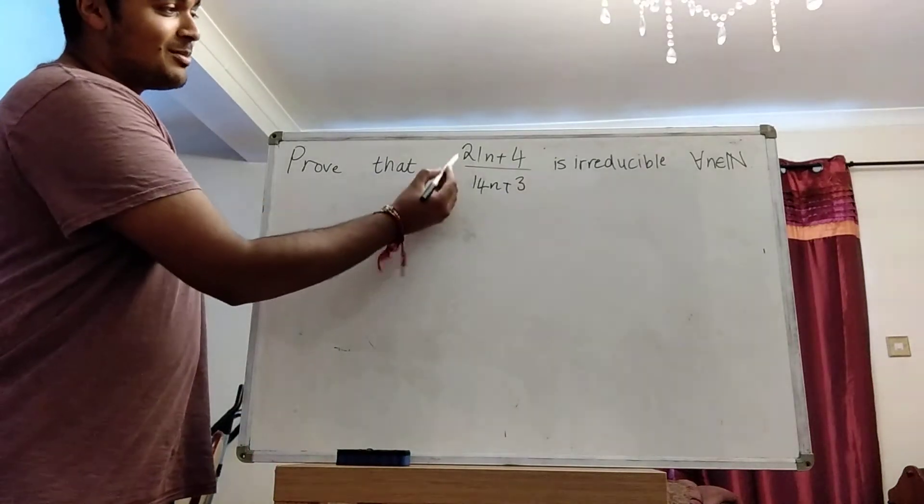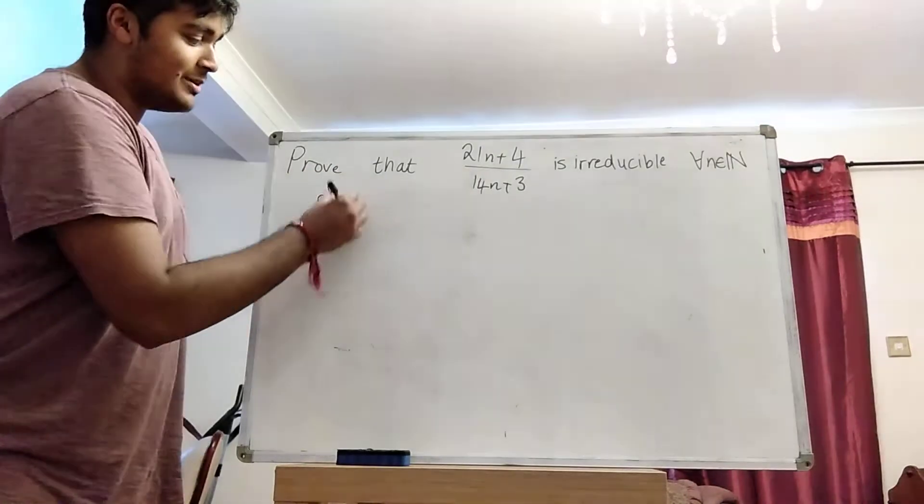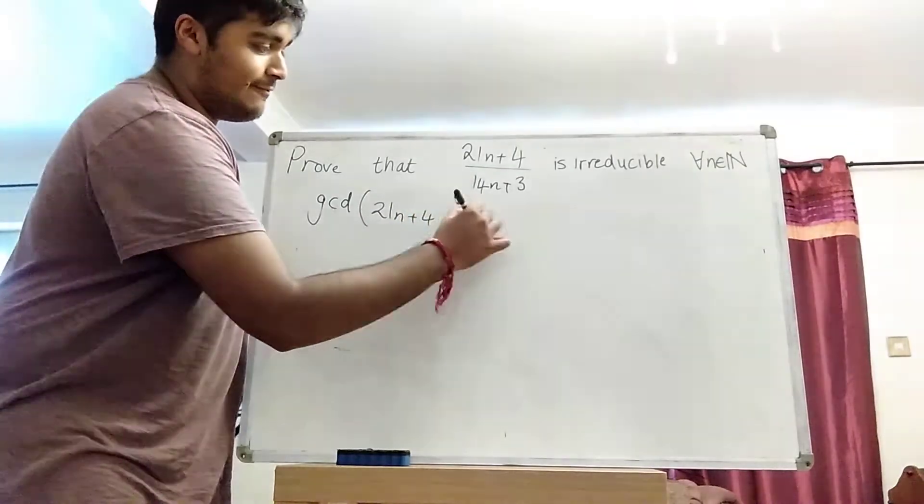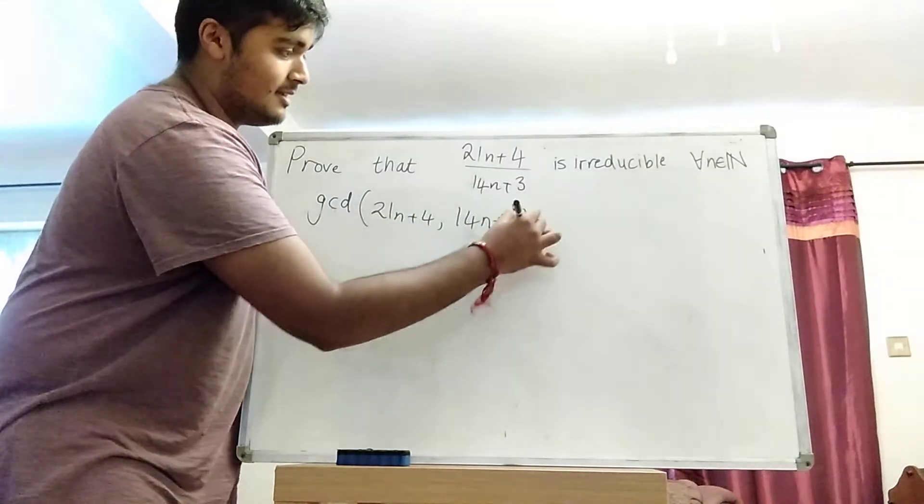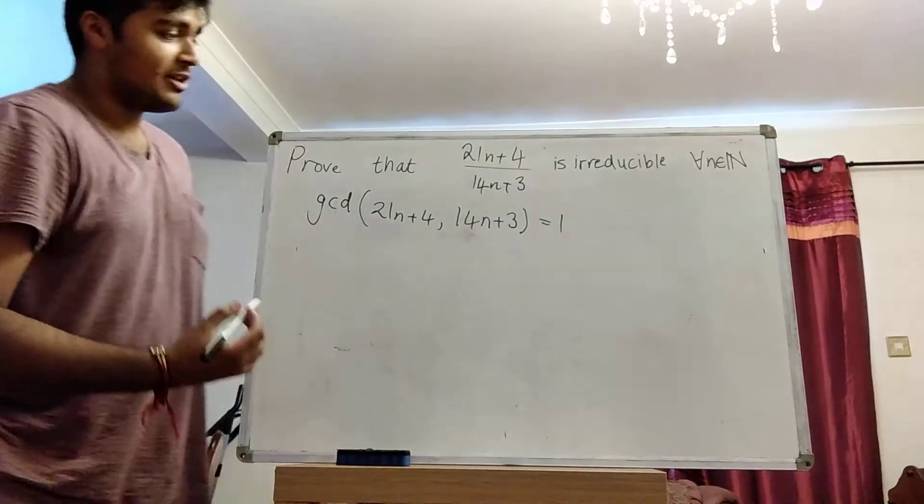Okay, so this problem here that we have is equivalent to showing that the greatest common divisor of 21n plus 4 and 14n plus 3 is 1. We want to show that they share no factors, which means they're co-prime.